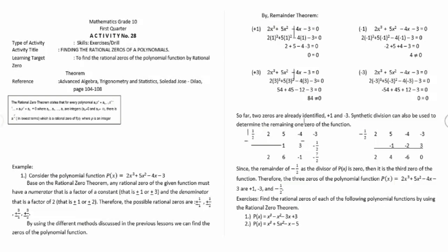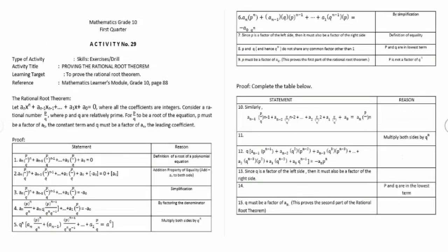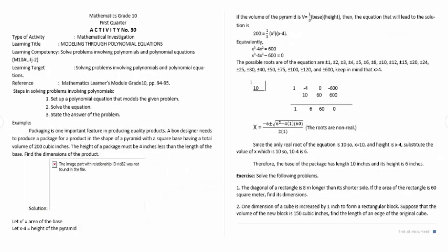Activity number 28: finding the rational zeros of a polynomial. Activity number 29: proving the rational root theorem. Activity number 30: modeling through polynomial equations. That is the end of the activities for the Grade 10 Mathematics first quarter. For more updates, please subscribe to this channel.